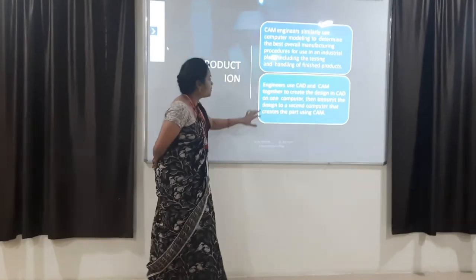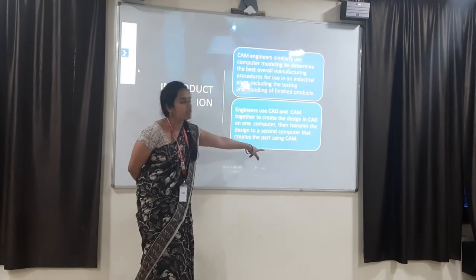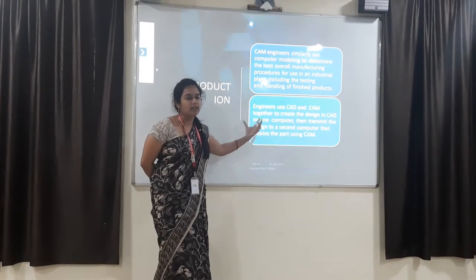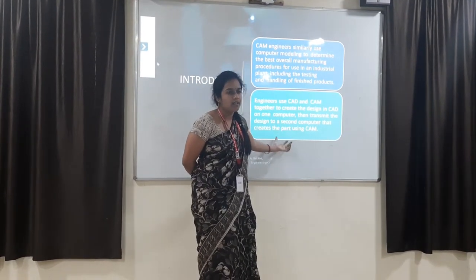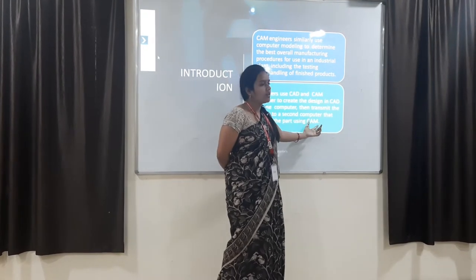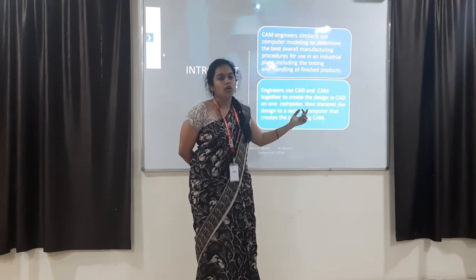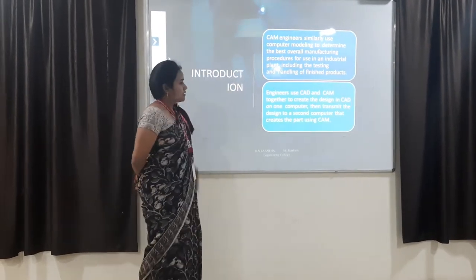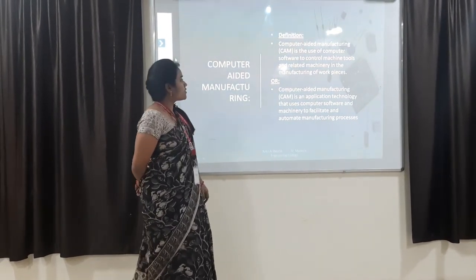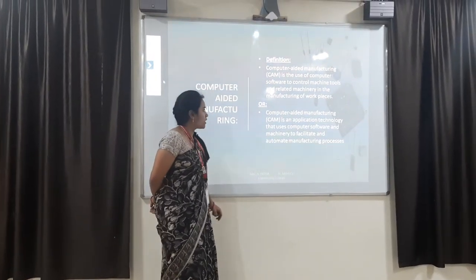Engineers can use CAD and CAM together — creating a design in CAD on one computer, then transmitting the design to the next computer for CAM operations. CAD drafting is converted into NC code; each and every movement is given a code, which is then used in CAM and connected to the machine tools.